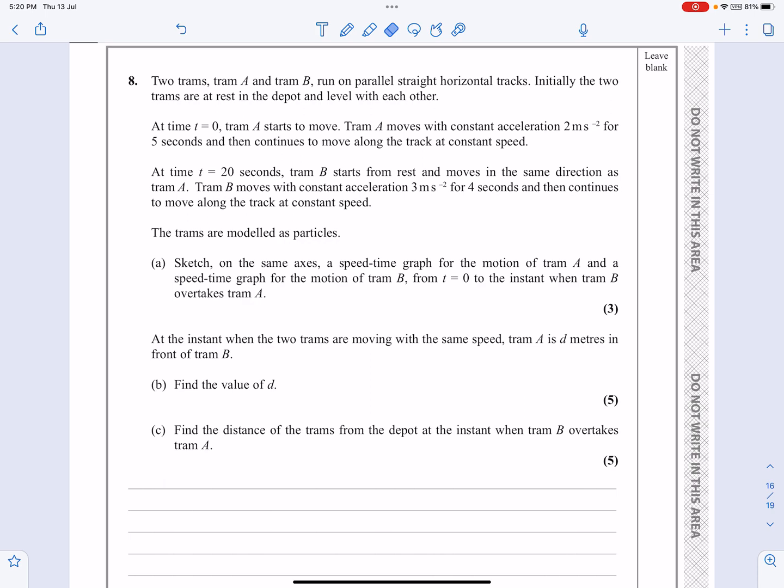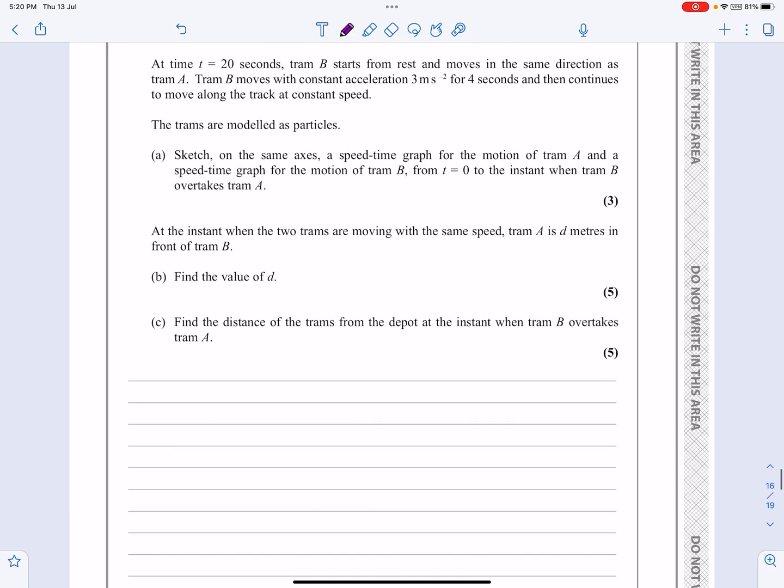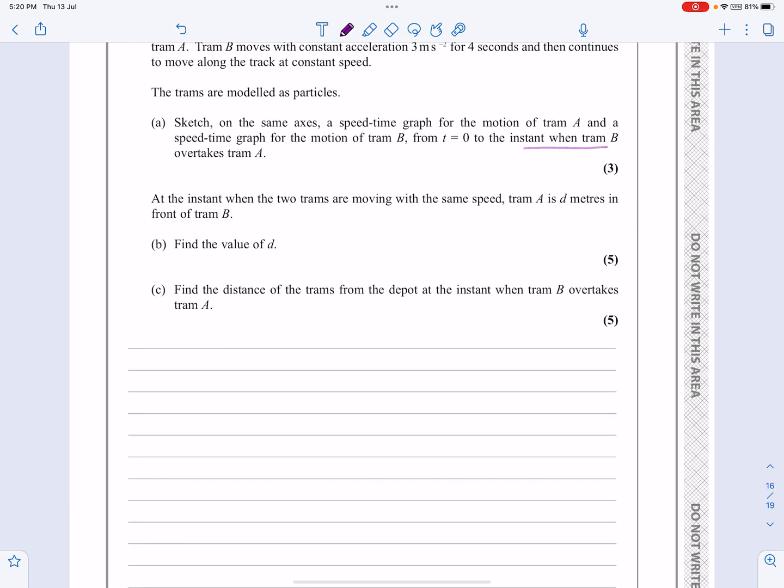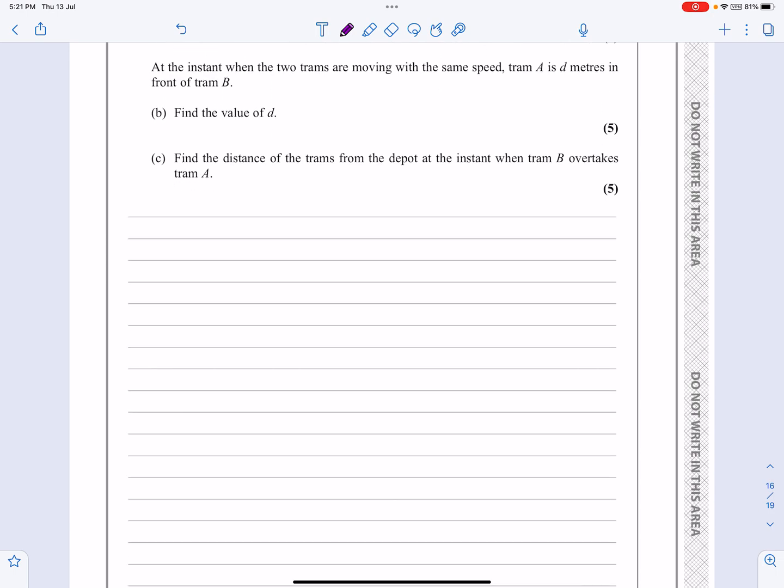So what is the information? It tells me I've got two different trams. Tram A starts at T equals 0 and accelerates for five seconds at 2 m/s² and then moves with a constant speed. Both of them move with constant speed at the end. Tram B by comparison starts 20 seconds later, moves with a different acceleration for a different amount of time but again ends up moving with constant speed. It says can we sketch on the same axes a speed-time graph all the way up to the instant where tram B overtakes tram A. Tram B will overtake tram A when they've done the same distance.